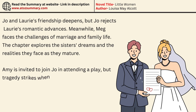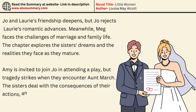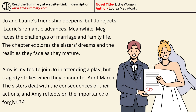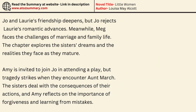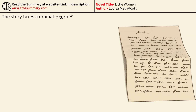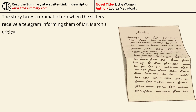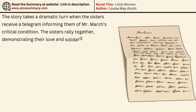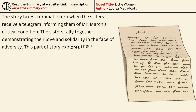Amy is invited to join Jo in attending a play, but tragedy strikes when they encounter Aunt March. The sisters deal with the consequences of their actions, and Amy reflects on the importance of forgiveness and learning from mistakes. The story takes a dramatic turn when the sisters receive a telegram informing them of Mr. March's critical condition. The sisters rally together, demonstrating their love and solidarity in the face of adversity, exploring themes of family bonds and resilience.